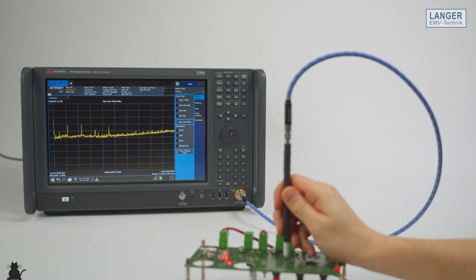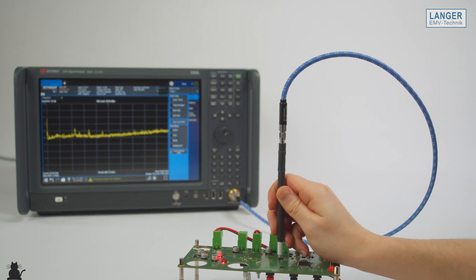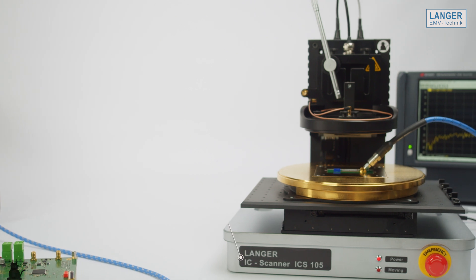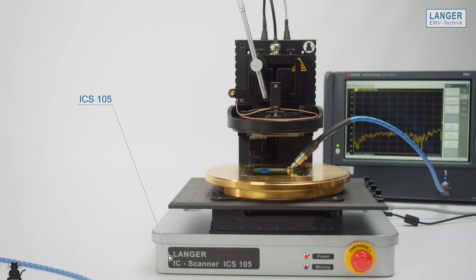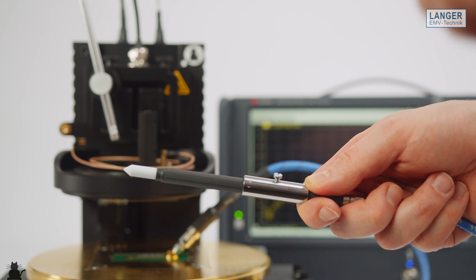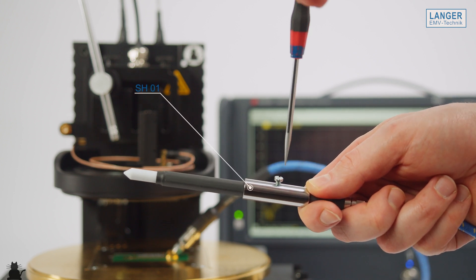For spatially reproducible and reliable measurements, it is recommended to use the probe in an automatic positioning system, for example in a Langer scanner. The probe must be used in the scanner with the SH-01 probe holder.